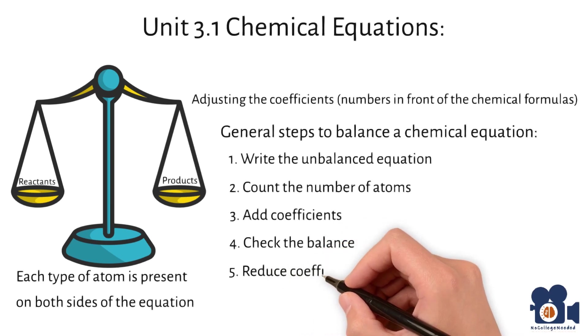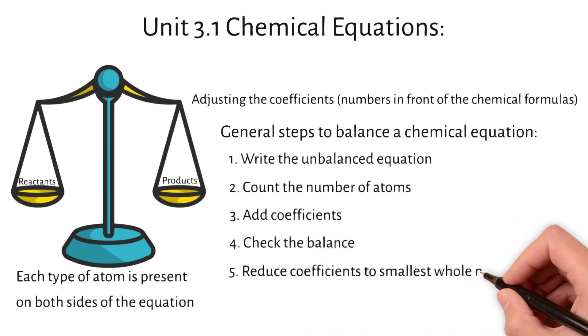Five, reduce coefficients to the smallest whole number ratio. If any coefficients are fractions, multiply all coefficients by the denominator to get rid of the fraction and make them whole numbers.